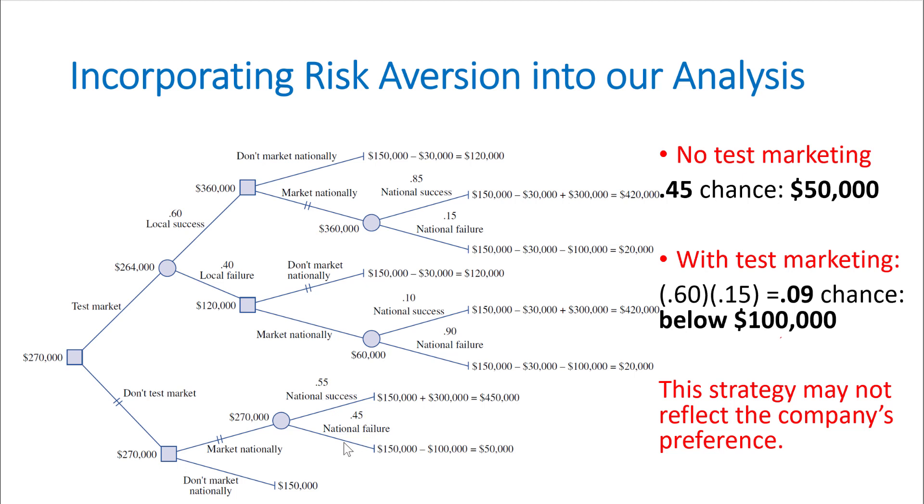Whereas if we go through this path and actually test market it, and if we see a local success then market it nationally, there is only a 0.15 times 0.60, which is 0.09 chance that we end up at $20,000. We still have a 91% chance that we end up with $420,000. That sounds more pleasing to someone who's very risk averse.